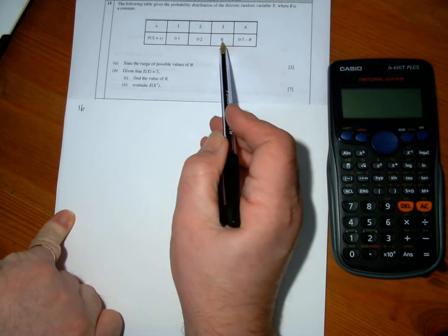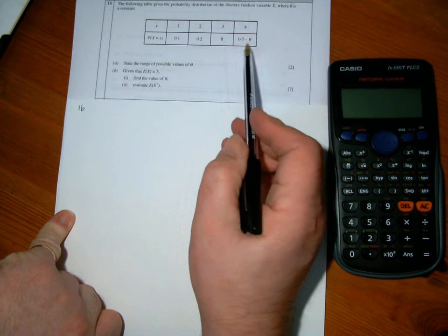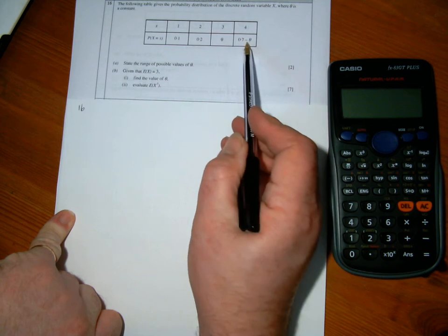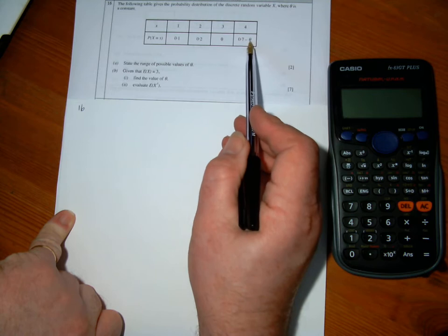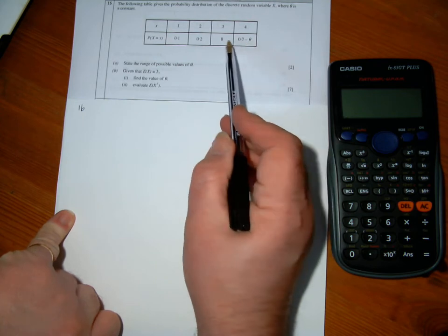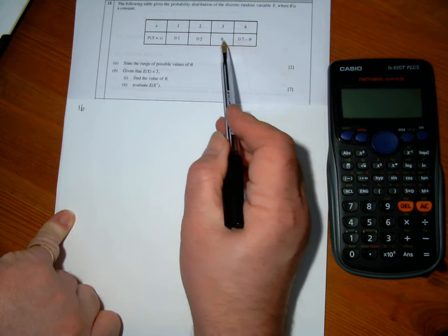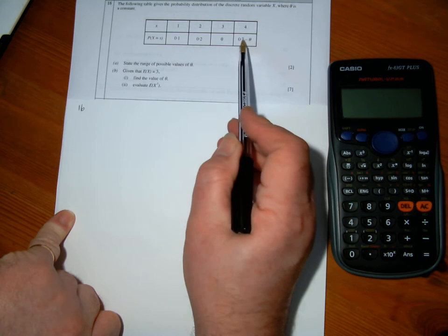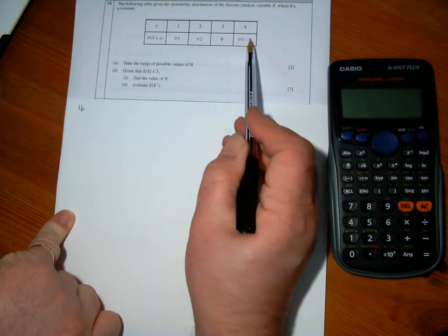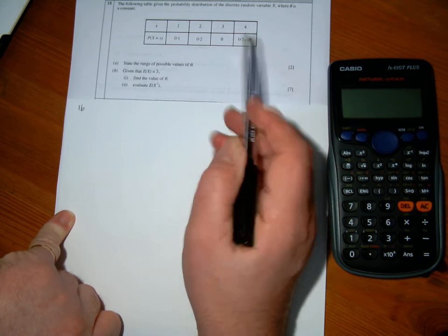So the theta here could be anything between 0 and 1, and this value of theta here could be anything from 0 up to 0.7. If it's bigger than 0.7, it's negative which is impossible. So all the values of theta between 0 and 1, this one gives me between 0 and 1, this one between 0 and 0.7.